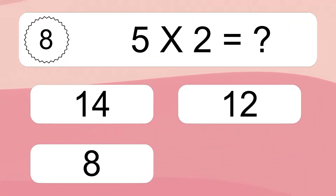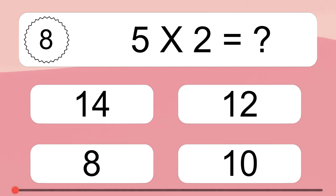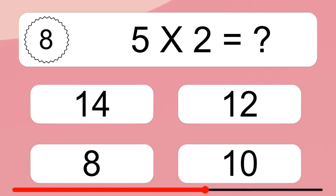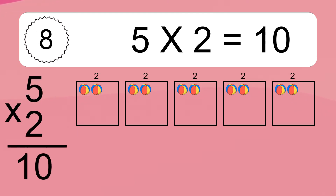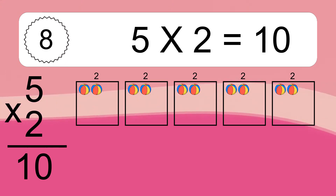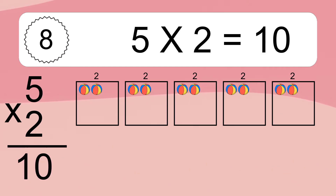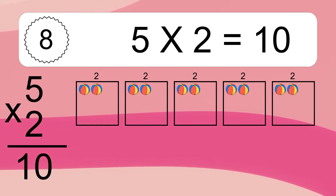5 times 2 equals what? 5 times 2 equals 10. We have 5 boxes, and each box has 2 colorful balls inside. If you count all the balls in all the boxes together, you will have 5 times 2 balls. This equals 10 balls.